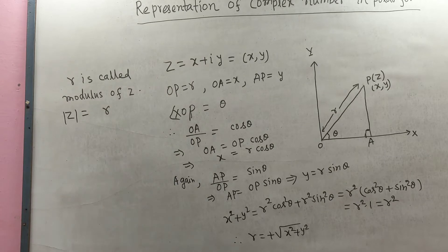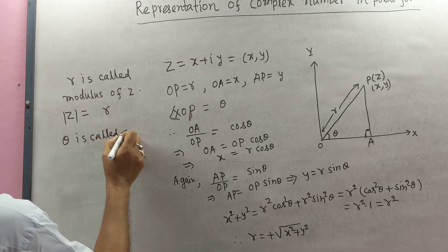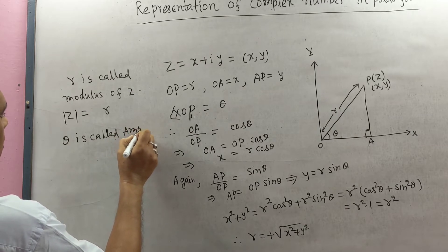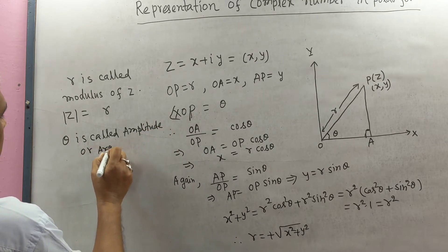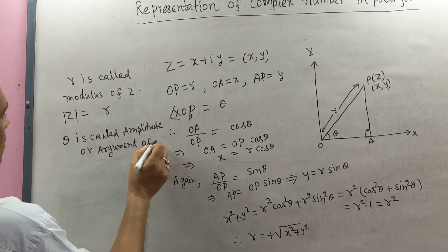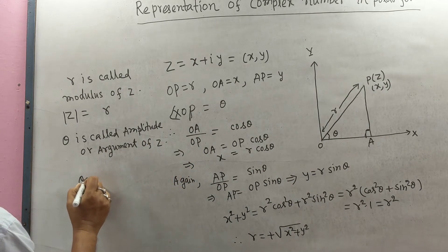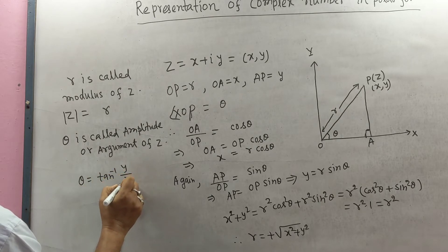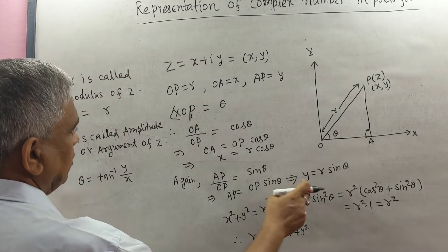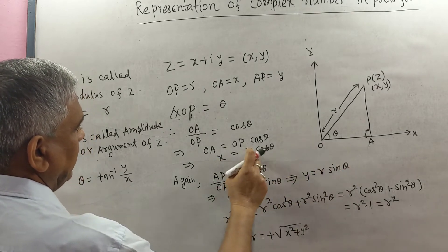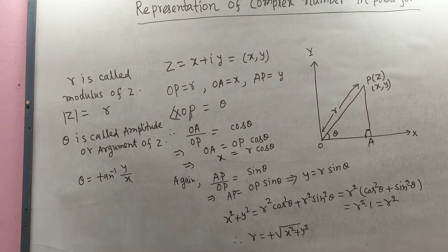θ is called the amplitude or argument of z. Here θ is written as θ = tan⁻¹(y/x), since dividing y by x gives r·sin θ / r·cos θ, so tan θ = y/x, and therefore θ = tan⁻¹(y/x).